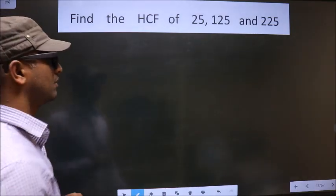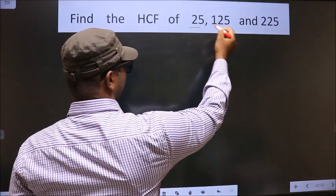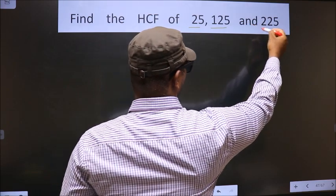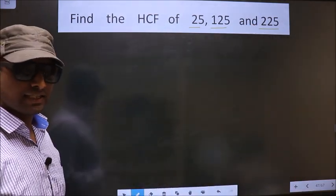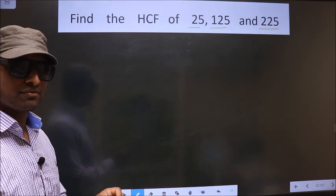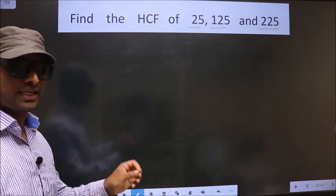Find the HCF of 25, 125 and 225. To find the HCF, first we should do the prime factorization of each number separately.